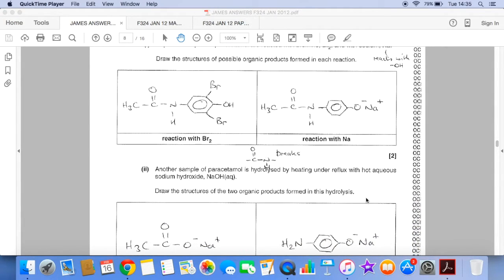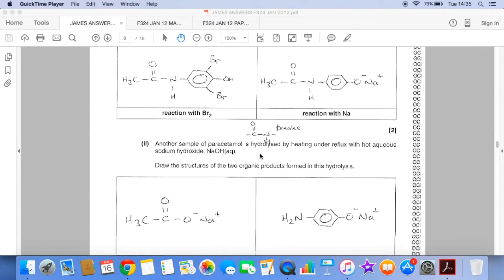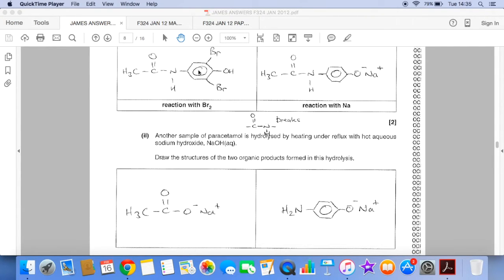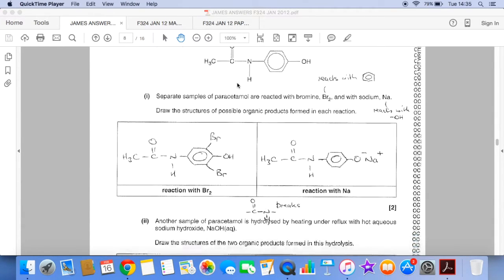Hydrolysis reaction. You can see again, I've scribbled up there a little pointer. It's the peptide bond or amide bond that breaks. So this bond here that the cursor's on. So what are we going to get? Well, if I get the paracetamol up there, this bond's going to break. And so that's going to become C double bond O, then O minus Na plus.